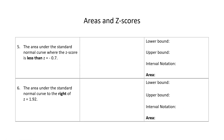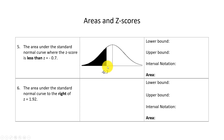Number 5: find the area that is less than z equals negative 0.7. Drawing the picture, negative 0.7 is to the left of the mean of zero. The table gives area to the left, which is exactly what we need here. The lower bound is negative infinity and the upper bound is negative 0.7; interval notation is z less than or equal to negative 0.7. The area should be less than 0.5, and the table agrees.